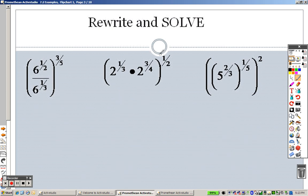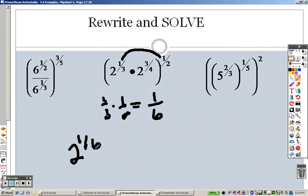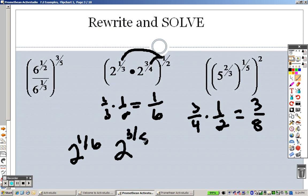This just means that I can take that through to each one, so I can multiply a third times a half to get 1 sixth. So I have 2 to the 1 sixth power. I can multiply that through to get 3 fourths times a half, which is 3 eighths. So I have 2 to the 3 eighths. Now, when you're multiplying, and there's no parentheses there, you just add the exponents. So this is 1 sixth plus 3 eighths.